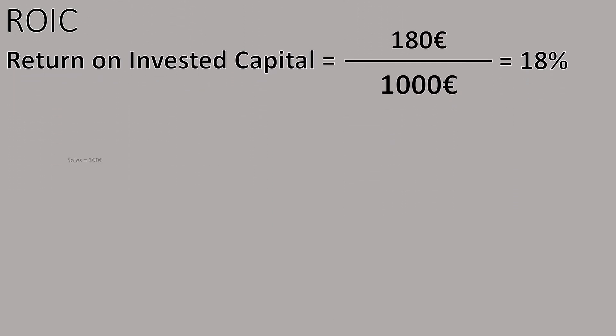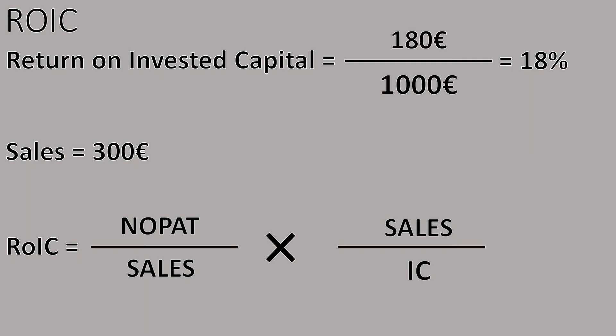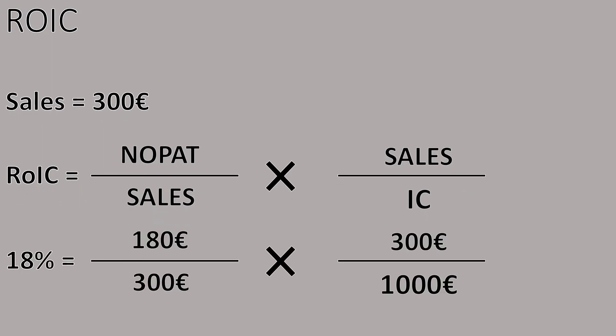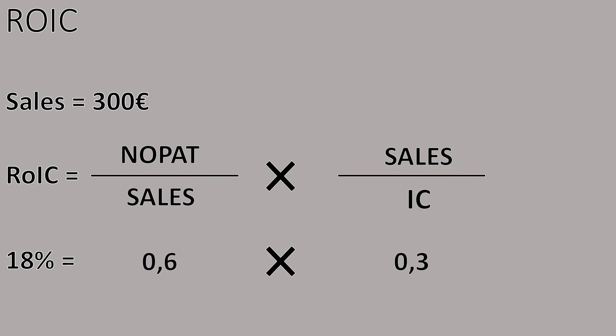Now let's take it even a step further and try to identify which competitive advantage the PayPoCorp enjoys. To accomplish this, we look once more in the annual report and find the value for sales: 300 euros. Now we use the DuPont analysis to calculate NOPAT margin and Invested Capital turnover. After dividing the 180 euros NOPAT by 300 euros in sales, and then 300 euros in sales by 1,000 euros Invested Capital, we arrive at a NOPAT margin of 60% and a capital turnover of 30%. You can verify that 0.6 multiplied by 0.3 equals 0.18. The 60% NOPAT margin is way higher than the 30% capital turnover. This suggests that the PayPoCorp has a customer advantage, offering us a general direction where we can expect to discover a competitive advantage.